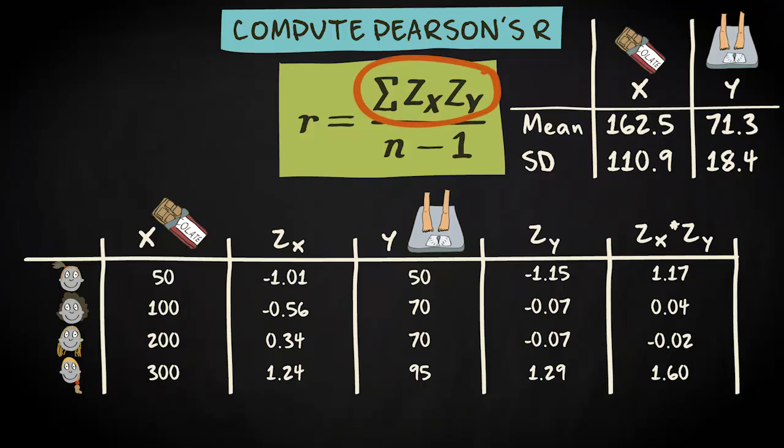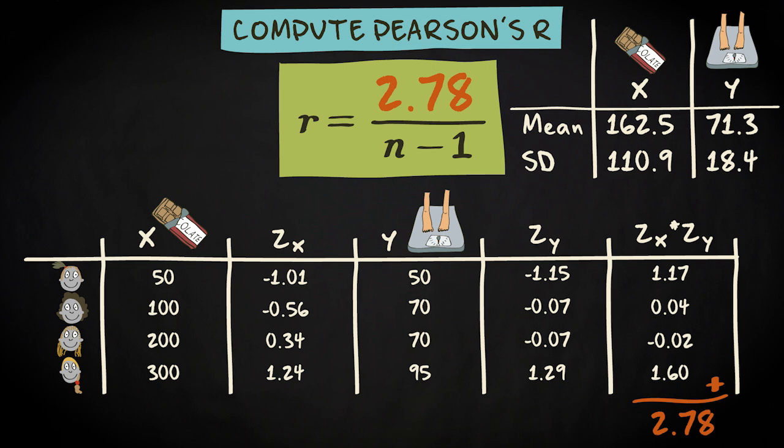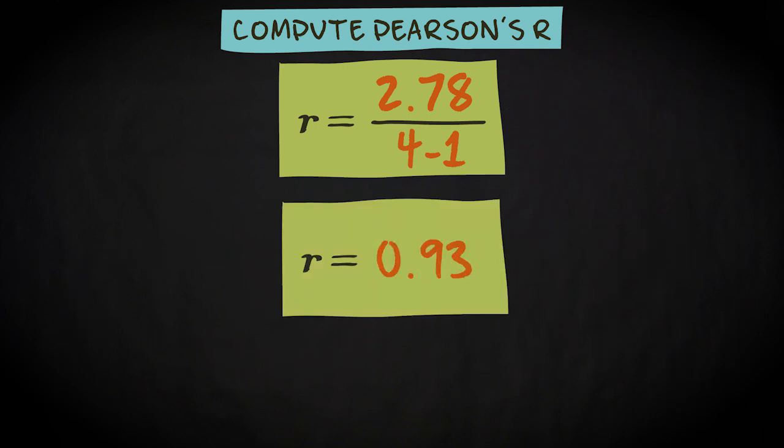To get this part of the formula, we add up all these scores. That's 2.78. To finish, we have to divide it by n minus 1. n equals 4, so in our case, n minus 1 means 4 minus 1, that's 3. The Pearson's R is 2.78 divided by 3. That equals 0.93.